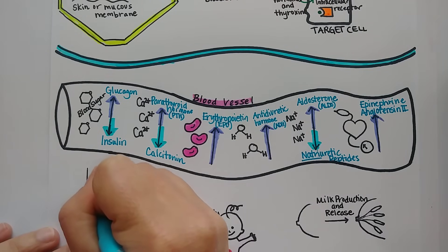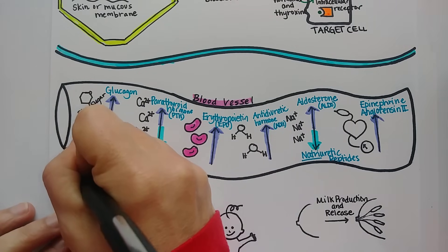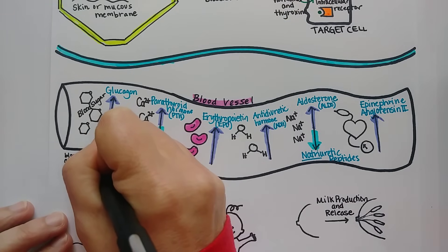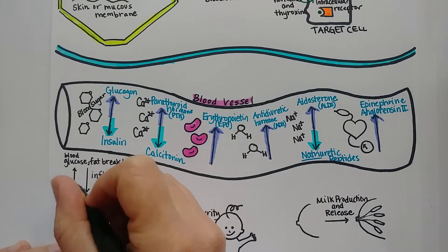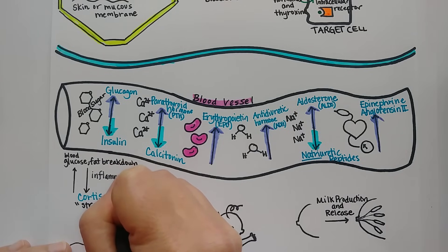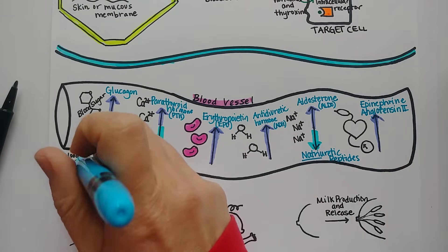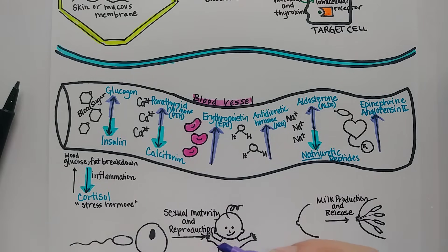Cortisol is a steroid hormone from the adrenal gland. It makes inflammation go down and is important for increasing the availability of energy: it increases blood glucose and increases fat breakdown. Think of it as your stress hormone that mobilizes energy. So cortisol makes inflammation go down during times of stress, inhibits the immune system, and makes blood glucose and fat breakdown go up.